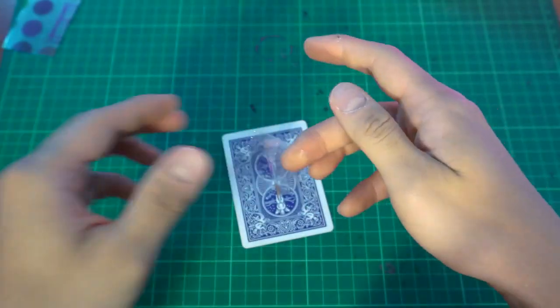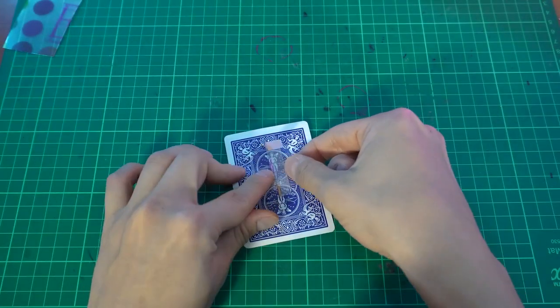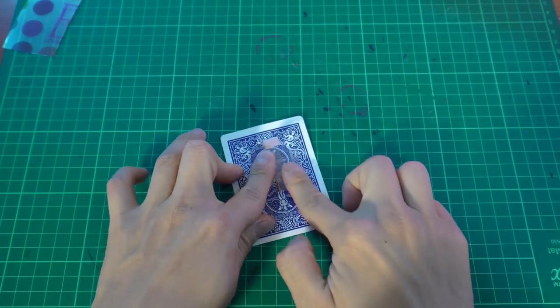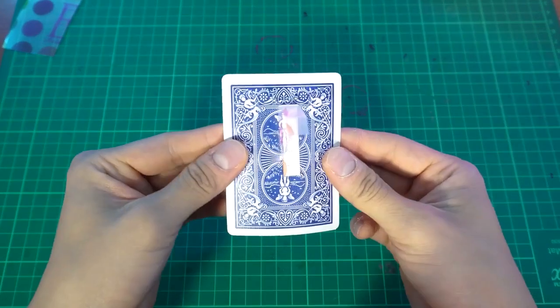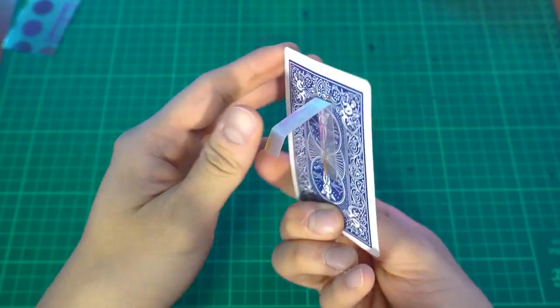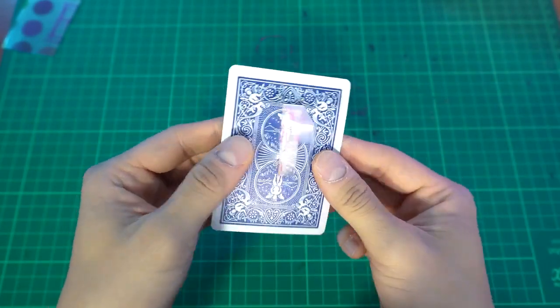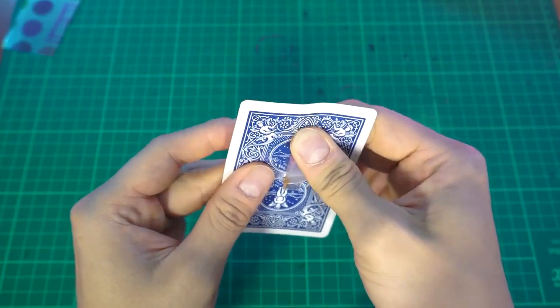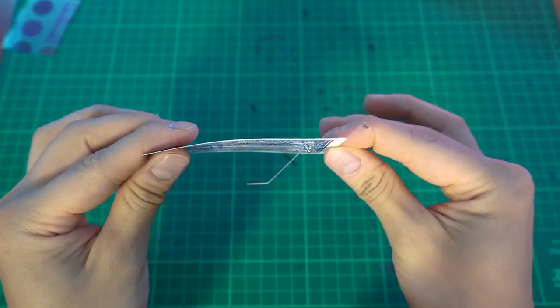Tape it nice and good. Do a few more times. I like to tape it twice for security purposes. And there we go. That is it. That is the gimmick. After that, just give it one more good crease at the end there. And this is good to go.